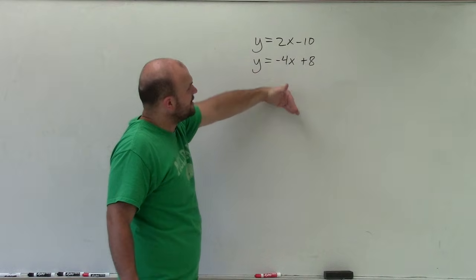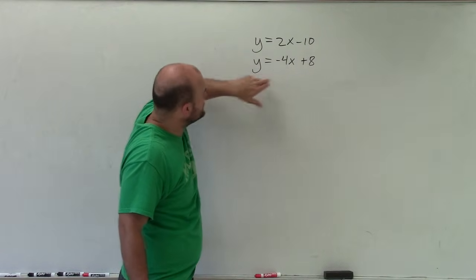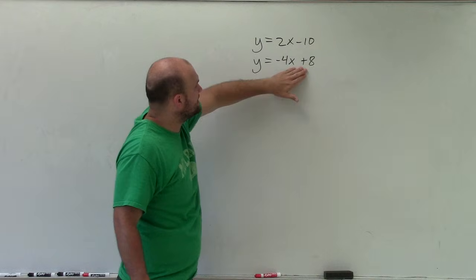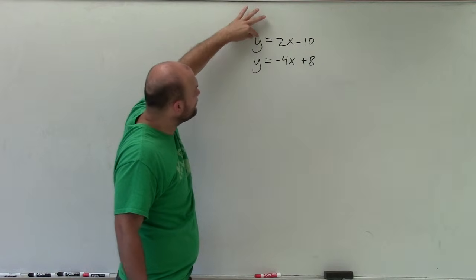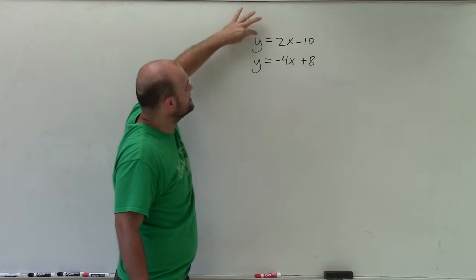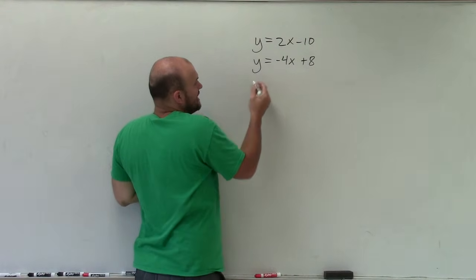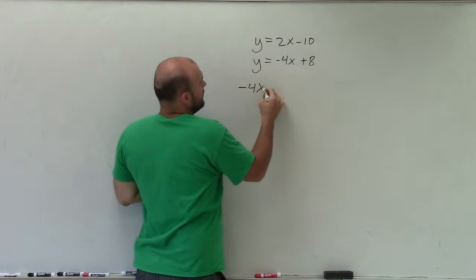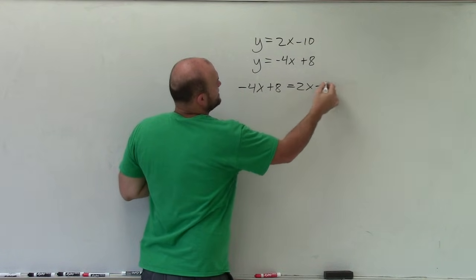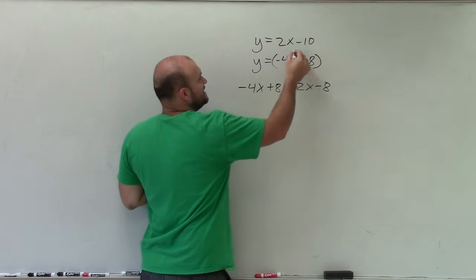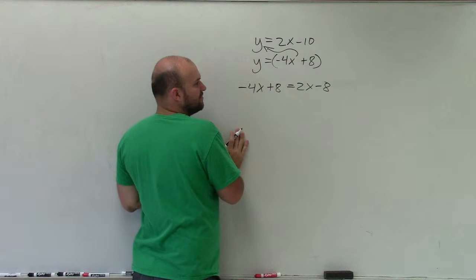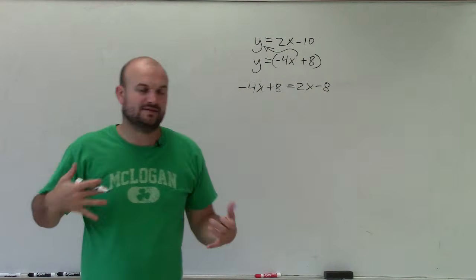So to write an equation that only has x's, I'm going to say, well, you know what? Since these two values are the same, I'm going to take this value and put it in for y, because then I can write an equation that only has x's in it. And these two y's are the same. So I can write negative 4x plus 8 is equal to 2x minus 8. All I'm simply doing is taking this value and plugging it in for y. That's what we call substituting, substitution.